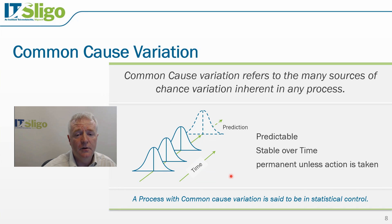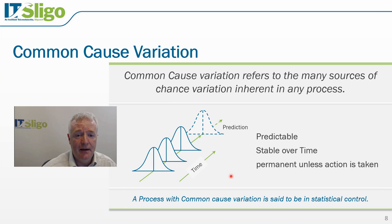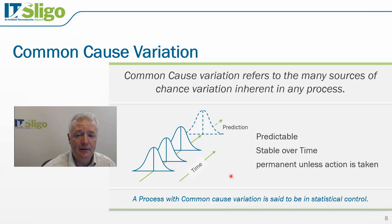Another example of common cause variation is the length of time it takes us to get to work every morning. There are many sources of variation which delay us — the number of cars on the road, the condition of the traffic lights, the weather conditions — but typically the length of time it takes us to get to work is predictable and generally stable. A process with common cause variation is said to be in statistical control.